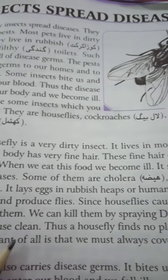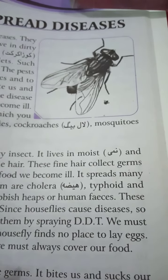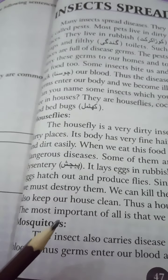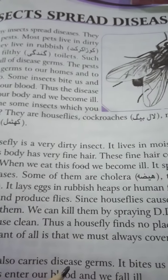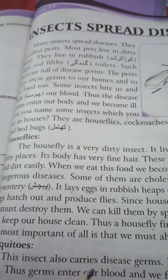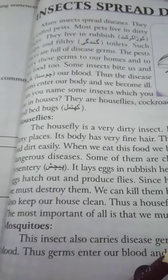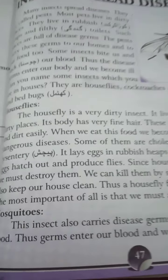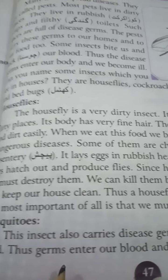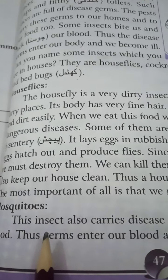These eggs hatch out and produce flies. Some house flies cause diseases, so we must destroy them. We can kill them by spraying DDT. (ہمیں مکھیوں کو ختم کر دینا چاہیے — DDT چھڑک کر ان کو مارا جا سکتا ہے۔)